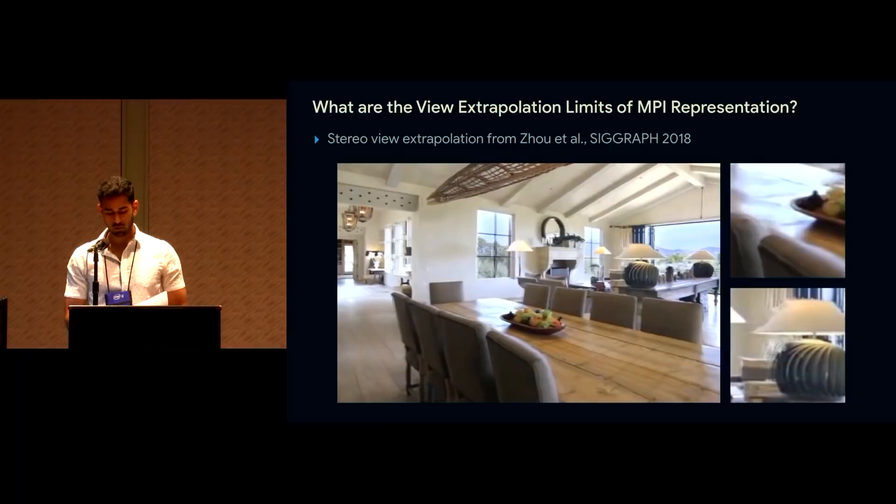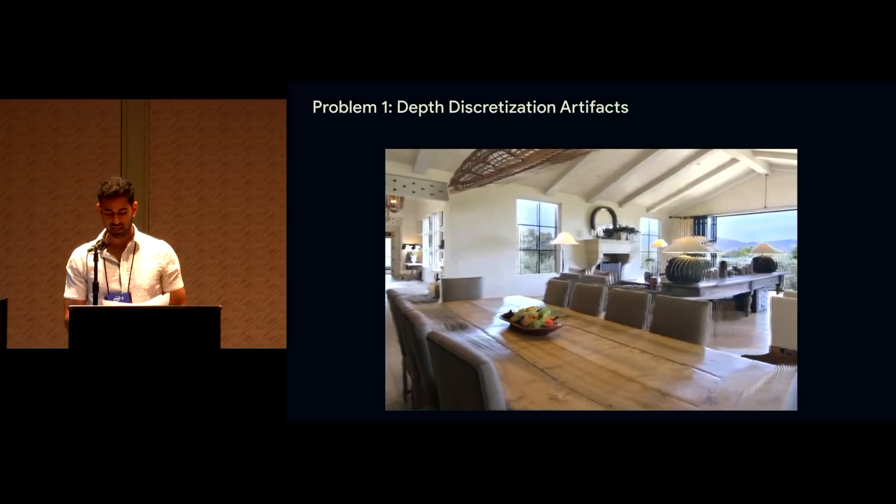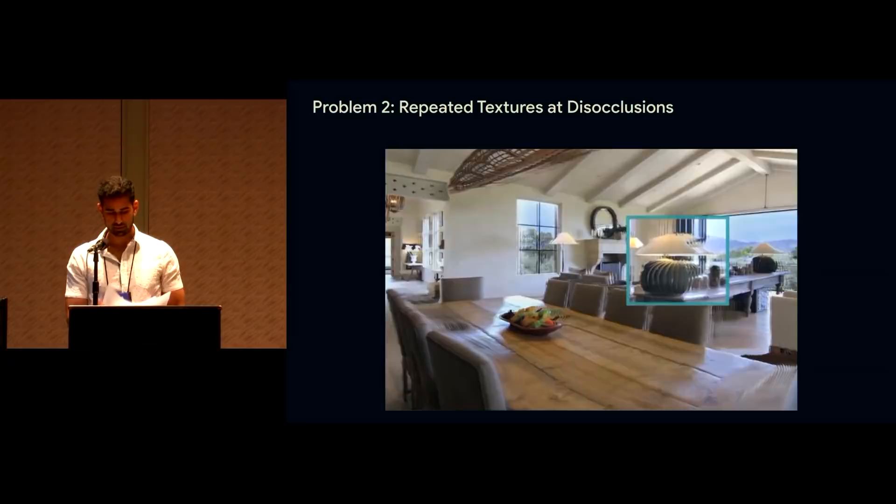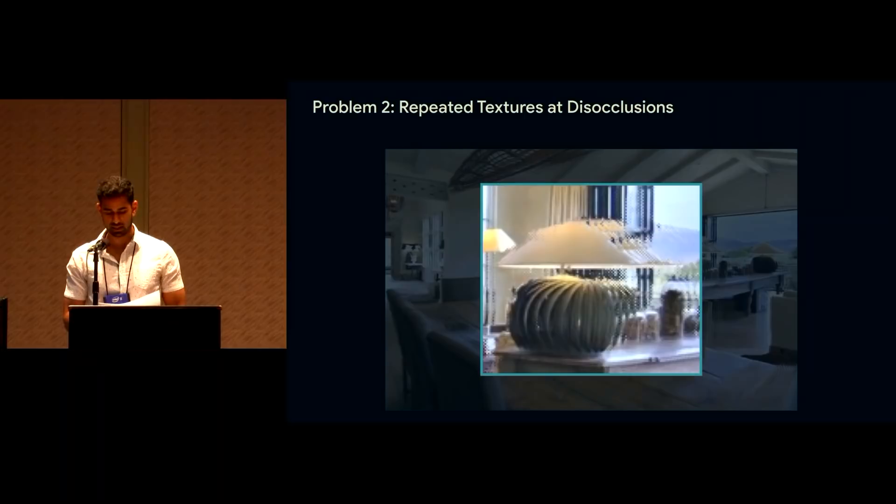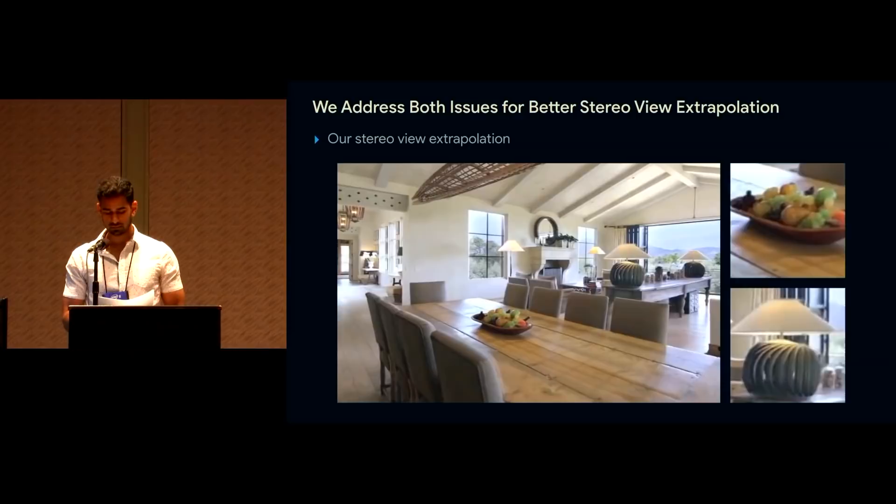So here's an example input pair and their extrapolated views. We were inspired by these results and wanted to figure out the limits on views rendered from this representation. So views near the inputs are very convincing. But the quality of rendered views rapidly degrades as the viewpoint moves further from the MPI reference frame, and we observe two main problems. First, we start to see depth discretization artifacts like the lines on this wood table where the separation between planes becomes very apparent. And if we pay attention to regions that are disoccluded in novel views like behind this lamp, we see repeated texture artifacts where disocclusions contain copies of foreground content.